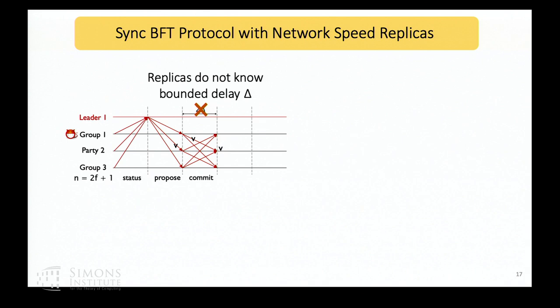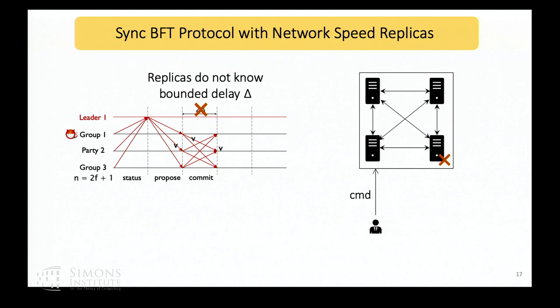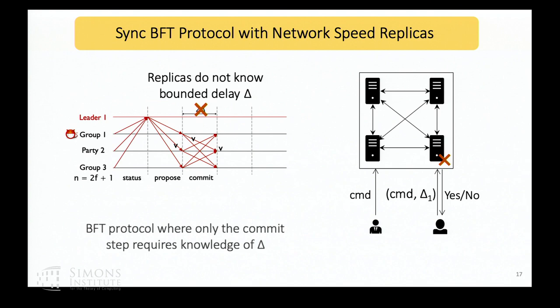Here's how this will work. A client submits a command. The replicas engage in some protocol and reach a state. Eventually, another client will come in and ask: for this command, if my bounded delay was delta one, is it committed? The replica gives a yes-no response. In essence, this BFT protocol is synchronous but only the commit step requires knowledge of delta — otherwise, delta is never used at all. This is what enables multiple clients with different values of delta.